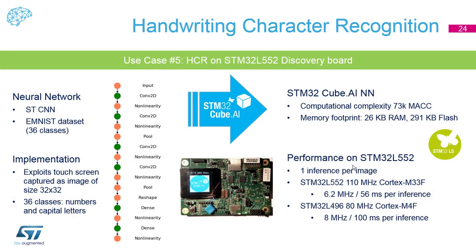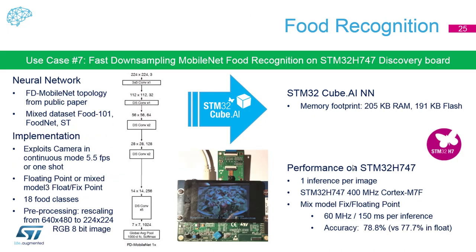Another demo is handwriting character recognition, where you can write with your finger on an LCD touchscreen — uppercase letters or digits from 0 to 9. This model has a very small footprint of only 26 kilobytes of RAM. In contrast, a more resource-hungry application is food recognition, a computer vision AI application where a camera looks at a dish and recognizes up to 18 different classes of food.